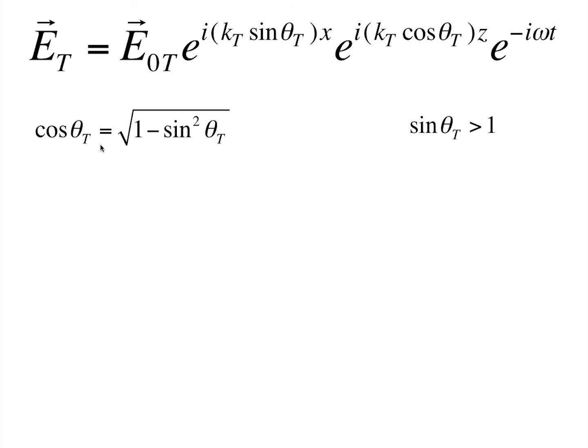We know that cos theta t is root of 1 minus sin square theta t. So, if sin theta t is greater than 1, it means that cos theta t is an imaginary number. Since kt is equal to n2 omega by c, where c is the speed of light and omega is the frequency, n2 is the refractive index,